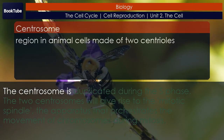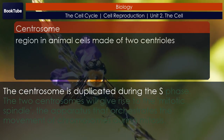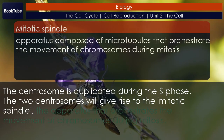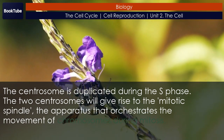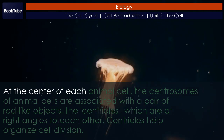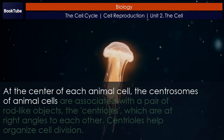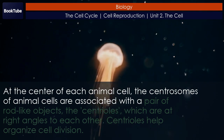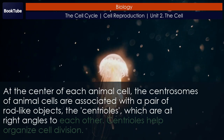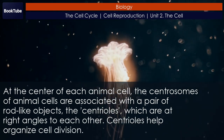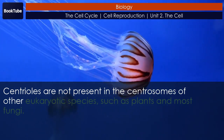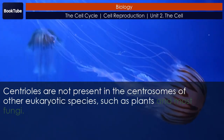The centrosome is duplicated during the S phase. The two centrosomes will give rise to the mitotic spindle, the apparatus that orchestrates the movement of chromosomes during mitosis. At the center of each animal cell, the centrosomes are associated with a pair of rod-like objects called centrioles, which are at right angles to each other. Centrioles help organize cell division but are not present in the centrosomes of other eukaryotic species, such as plants and most fungi.